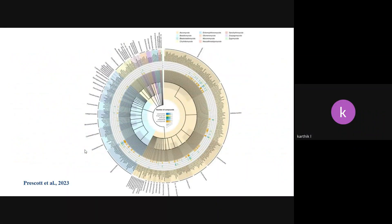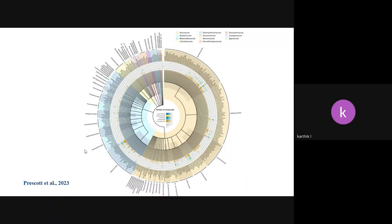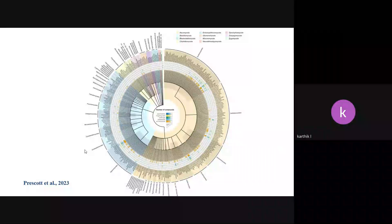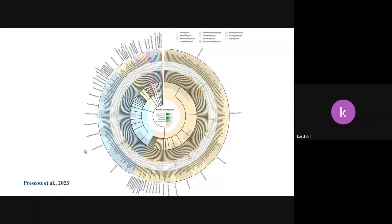By 2020, a database was compiled of all antibiotics reported from fungi. This graph shows how many species and how many antibiotics have been reported from fungal species. The blue color indicates psychiatric compounds; light yellow and green indicate antifungal and antibacterial compounds. Several antibiotics have been reported from various fungal species.